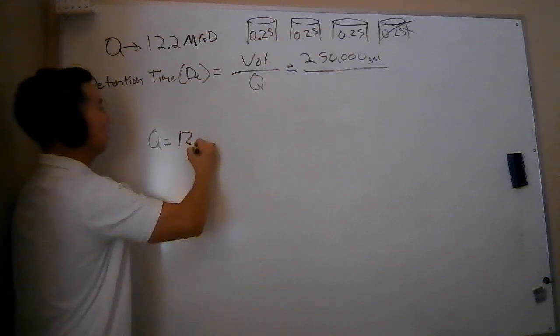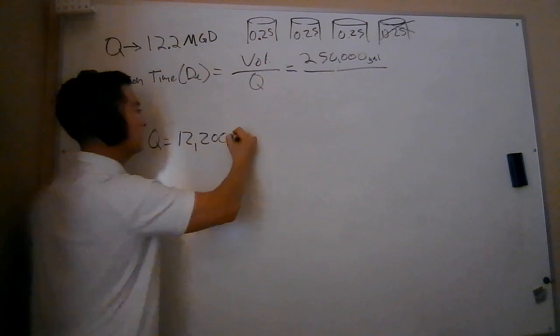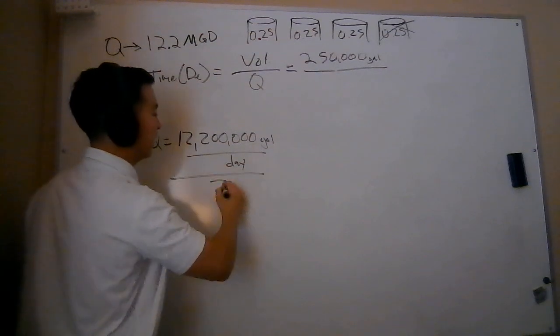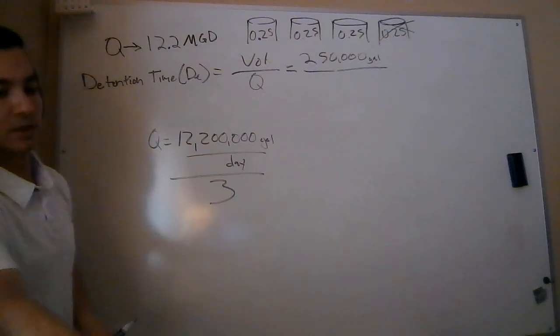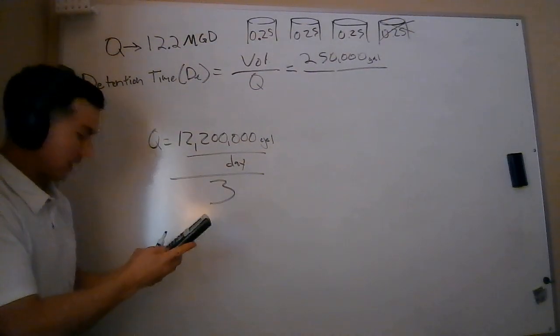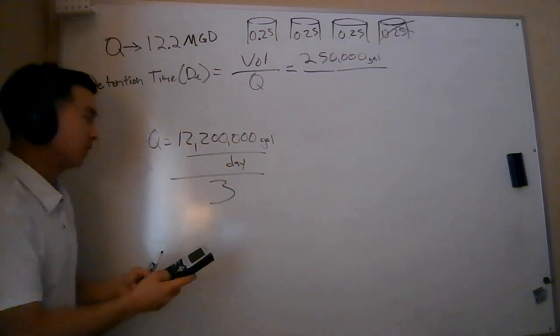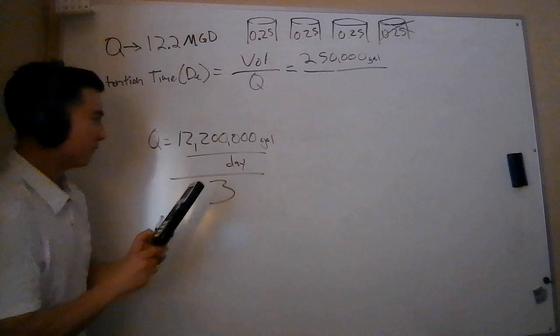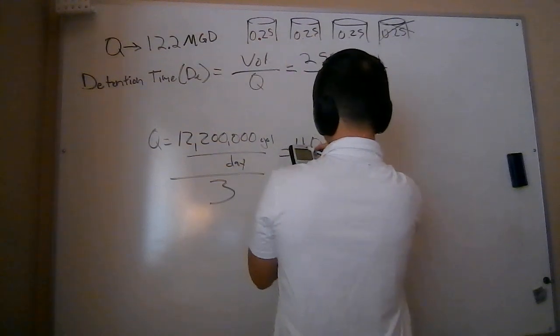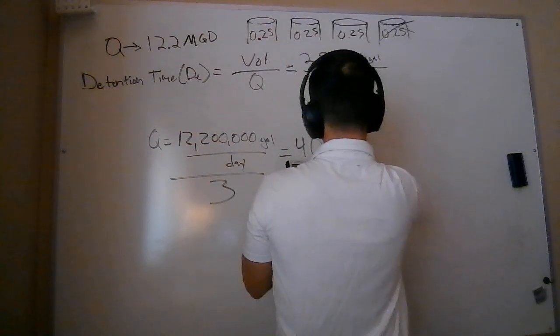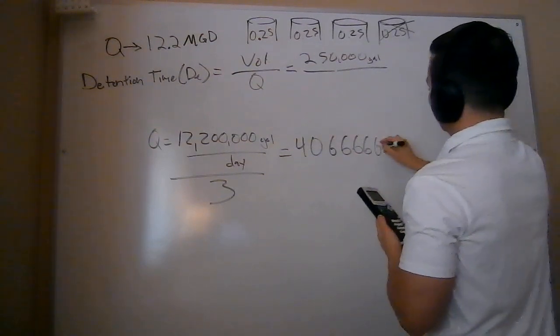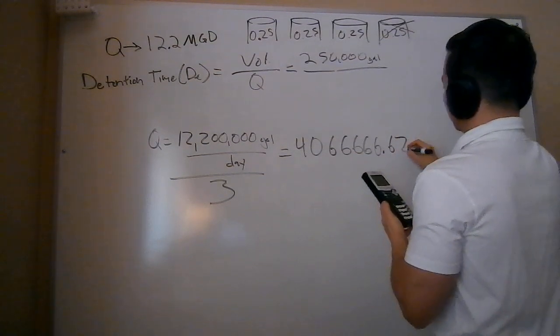So let's look at that real quick. If my Q is equal to 12,200,000 gallons per day, well, I need to be able to divide this by three because that's how much flow is going into just one of those. So let's look at that. 12,200,000. Make sure your zeros line up. Divided by three. And that's going to give me a flow rate of 4,066,666 and it's 666 on and on. We'll just say 0.67.